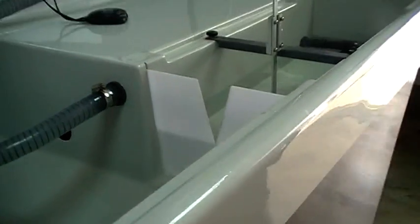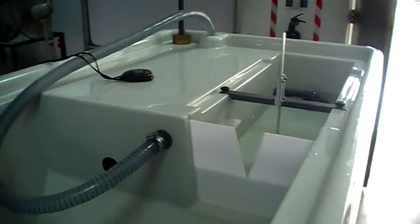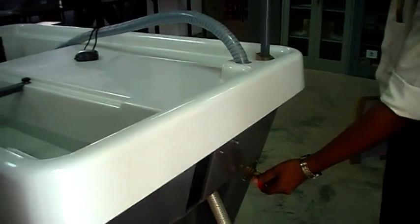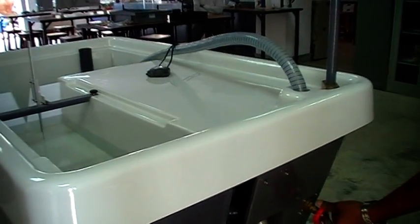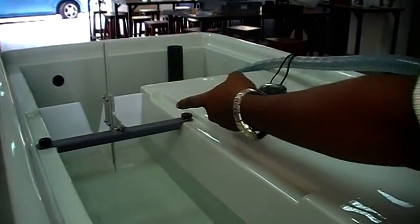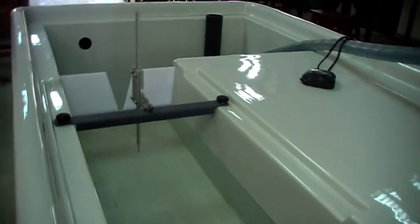We will use the V-notch for the experiment to determine the coefficient of discharge. So first you have to turn on the pump. Then you have to slowly open the inflow control valve. Then you can see the water level gradually increasing on top of the weir.